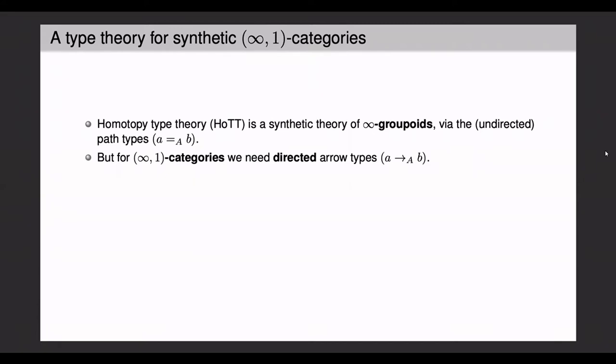But for infinity one categories, or infinity categories for short, we need directed arrow types. So Riehl-Verity in 2017 proposed STT, a simplicial extension of HoTT to achieve precisely this.